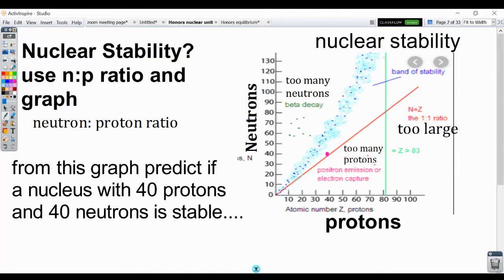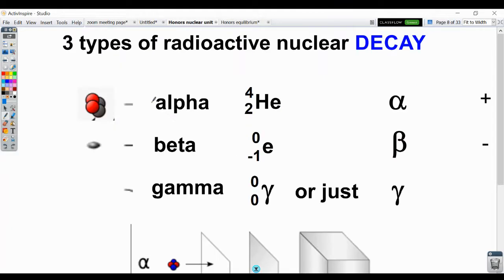If a nucleus is not stable, then it might undergo one of several types of radioactive decay. And those are going to be shared in another video. Hope that you helped understand some of the nuclear forces and information here. Have a good day.